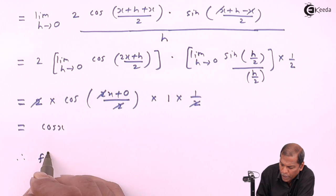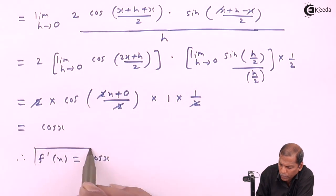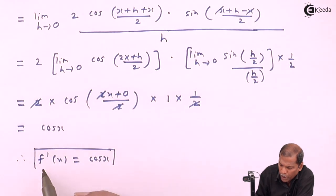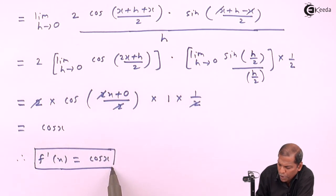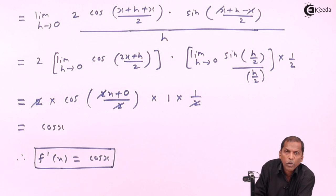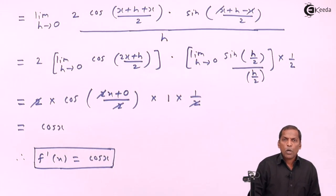And in this way, f dash x is equal to cos x. So it means the derivative of sin x is cos x. So this is the required solution for the given function. Thank you.